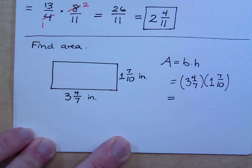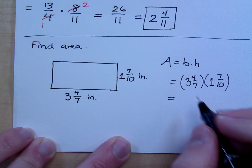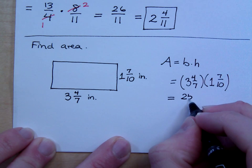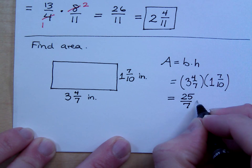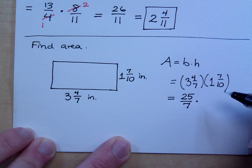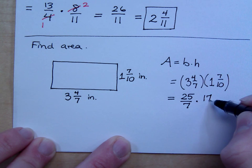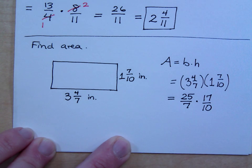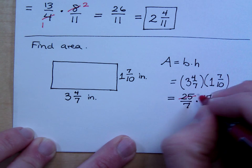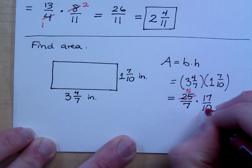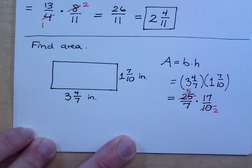To multiply these two numbers, I have to do what first? Make them improper fractions, and what is 3 and 4 sevenths? That's 25 over 7. And 1 and 7 tenths. What is that? 17 over 10. Is there any reducing that I can do? 10 and 25 have a common factor of what? So those would reduce by a factor of 5. That gives me a 5 here. It gives me a 2 here. Is there anything else here that can be done?